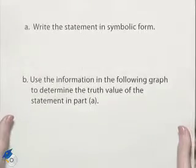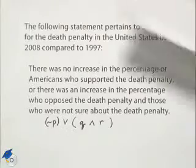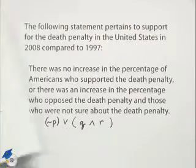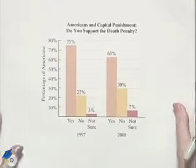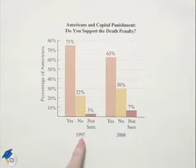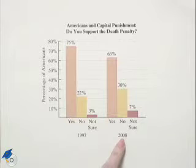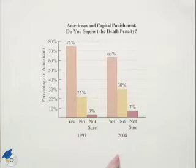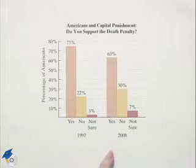Now we use the information in the following graph to determine the truth value of the statement we came up with in part A. Here's the graph we're interested in. Notice that we have what's going on in 1997 compared to what's going on in 2008. So let's determine the truth values of P, Q, and R in relation to this.